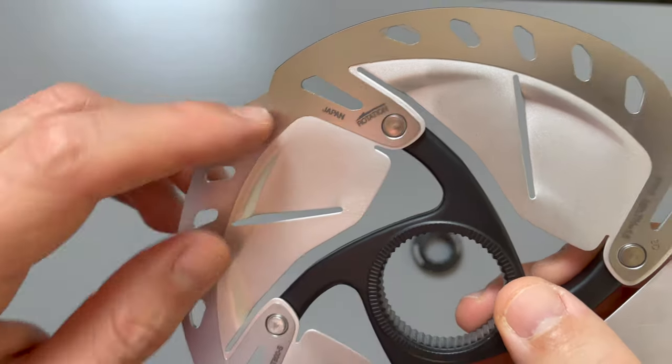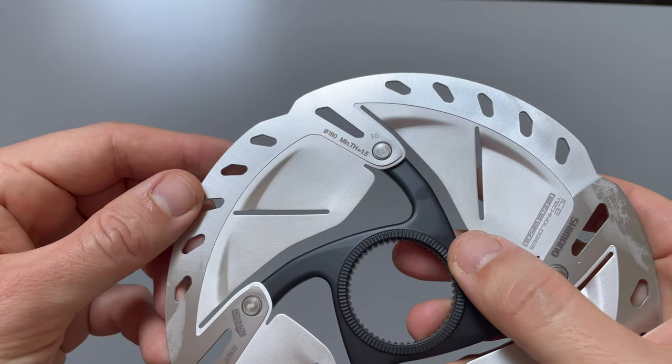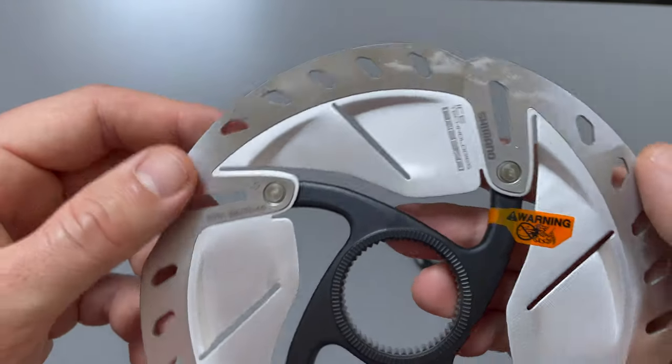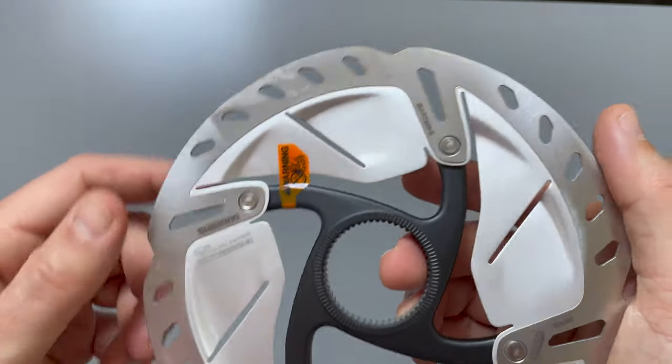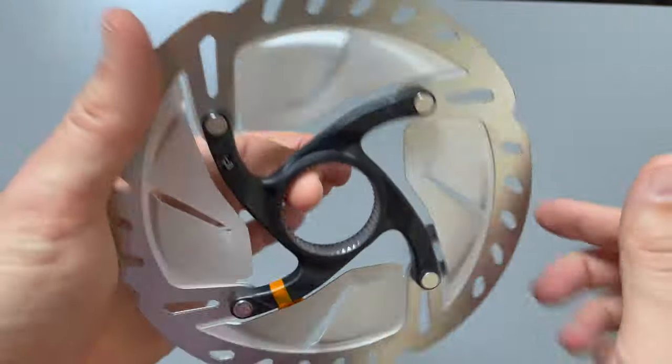Looking around the outside of the disc we have various printed information: made in Japan, the rotation direction, 160mm diameter, and the minimum thickness of the usable disc which is 1.5mm. Also advertising Shimano IceTek Freezer technology and RT800 which is the Ultegra level part number.